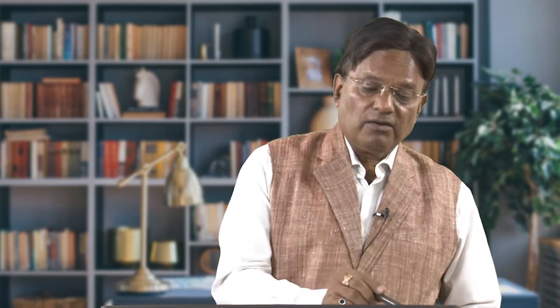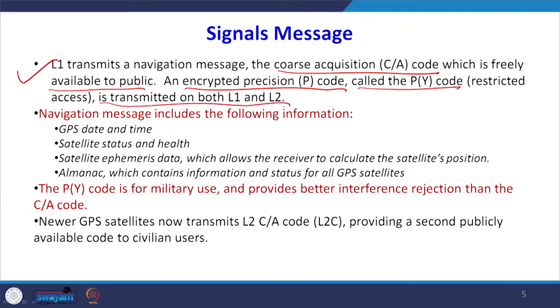If we have a receiver which works on a single L1 signal, it will transmit a navigational message in course acquisition code — the CA code — and this code is freely available to the normal public. The other one is the encrypted precision code called PY code. It has restricted access and is transmitted on both L1 and L2 type receivers.